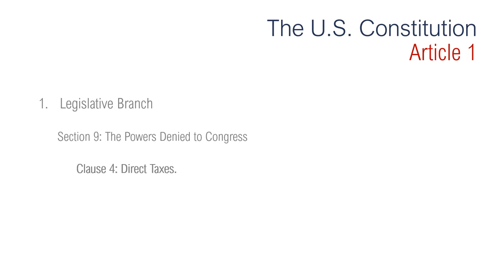Section 9, Clause 4 says no capitation or other direct tax shall be laid unless in proportion to the census or enumeration herein before directed to be taken. A capitation is a tax on a person; a direct tax is a tax paid directly to the government, such as a property tax. This clause was intended to prevent Congress from levying a tax on slaves per person and thereby taxing slavery out of existence.